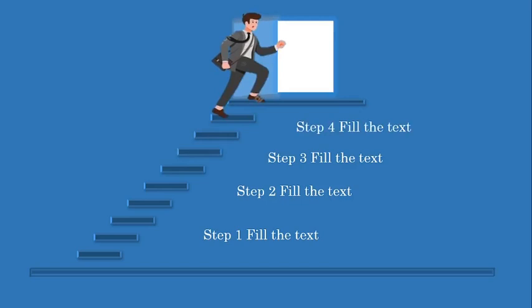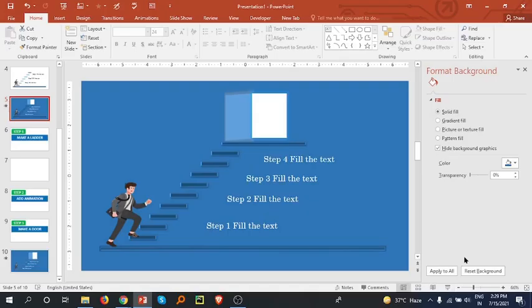In this session we are going to see how this animation works. There is a person who is climbing a ladder going to the store of success. In each step we can fill the steps: step one, step two, step three, and step four. It is an animation slide which your audience will definitely like.